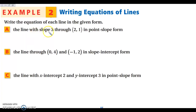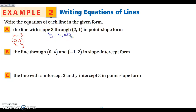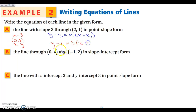Let's write the equation of a line with slope 3 and the point (2, 1). I'll call that x1, y1. The point-slope form is y minus y1 equals m times x minus x1. My y1 is 1, so y minus 1 equals 3 times x minus 2. That's it — that is the equation in point-slope form. You do not have to do anything else to it.